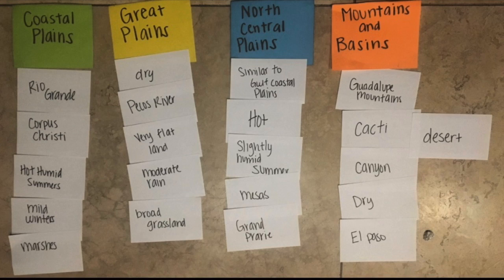Within this activity, we're going to do Mountains and Basins, Great Plains, North Central Plains, and Coastal Plains. The students will be pairing their landforms, climates, and vegetation under the correct region.